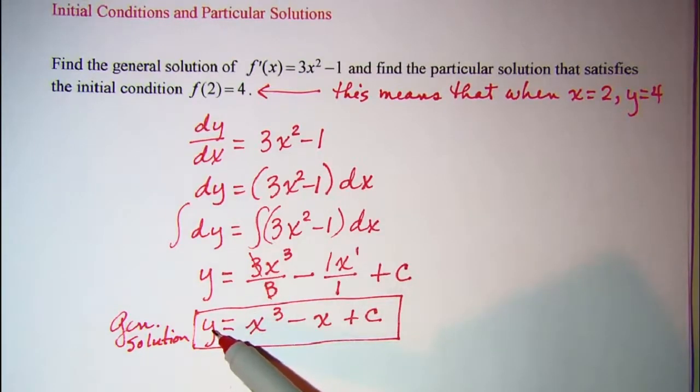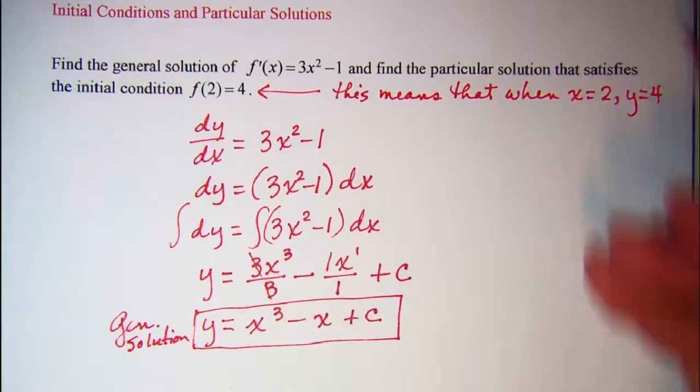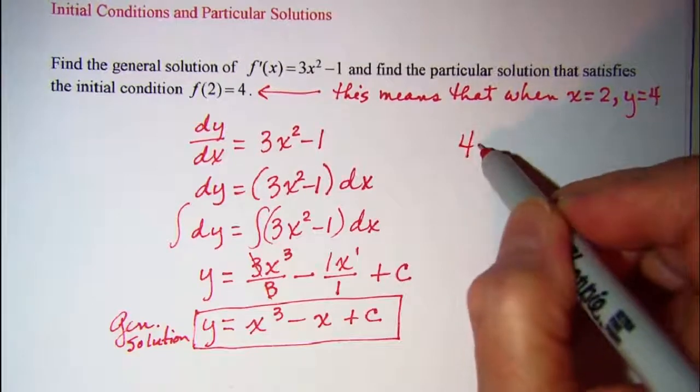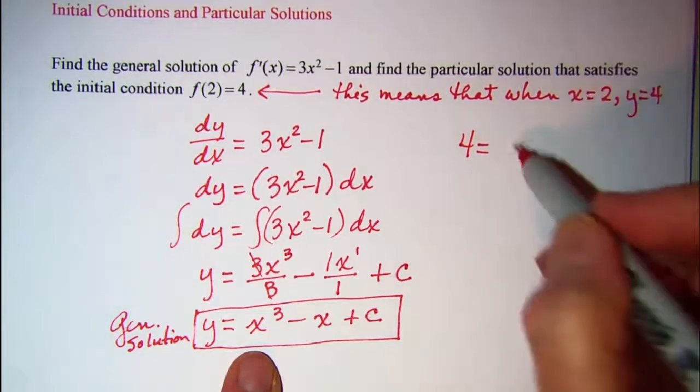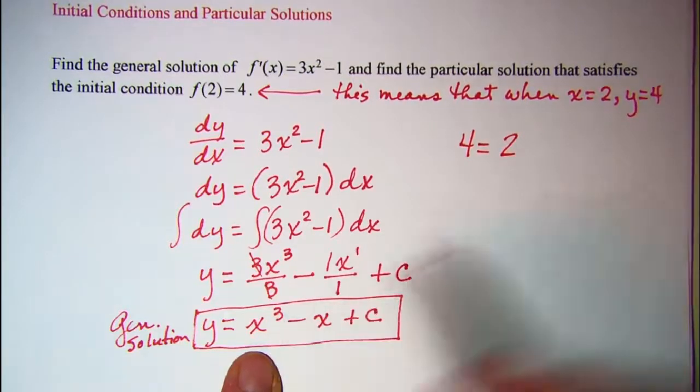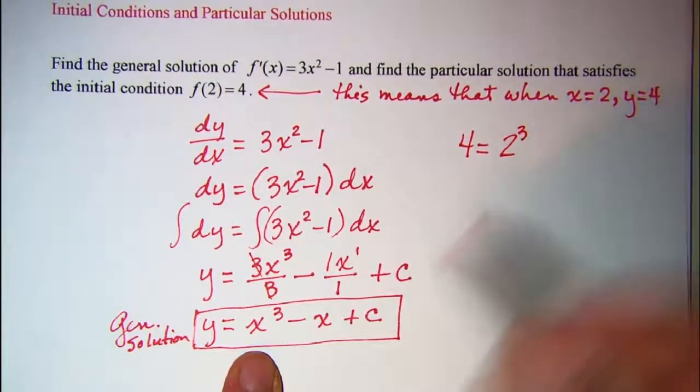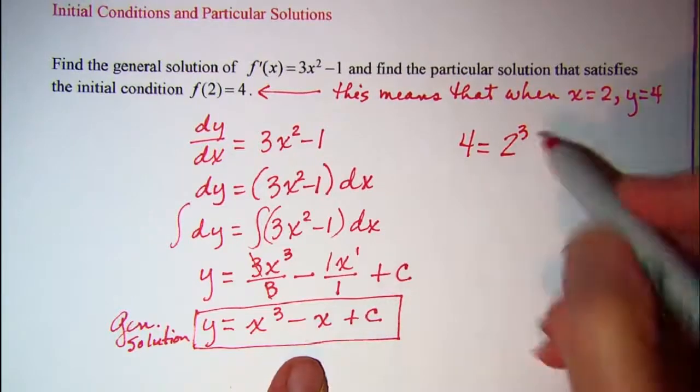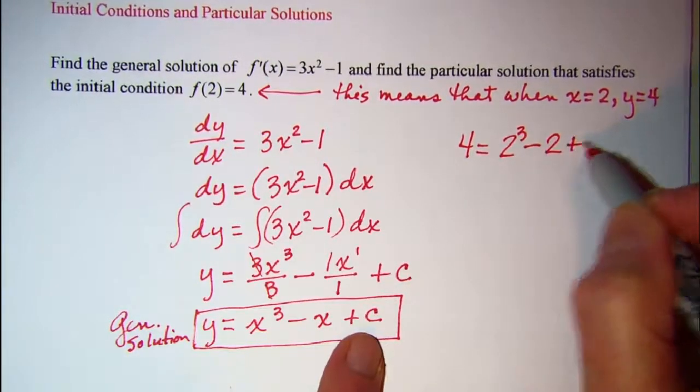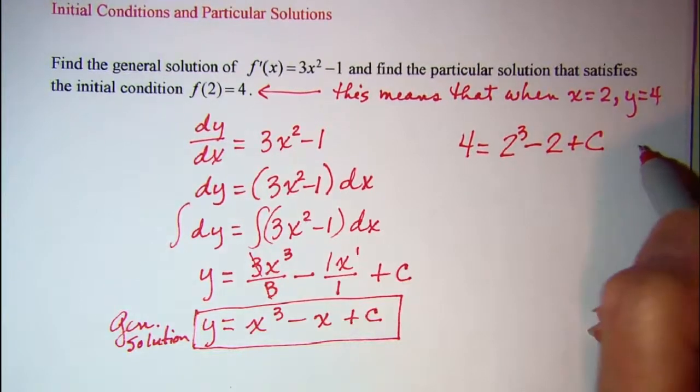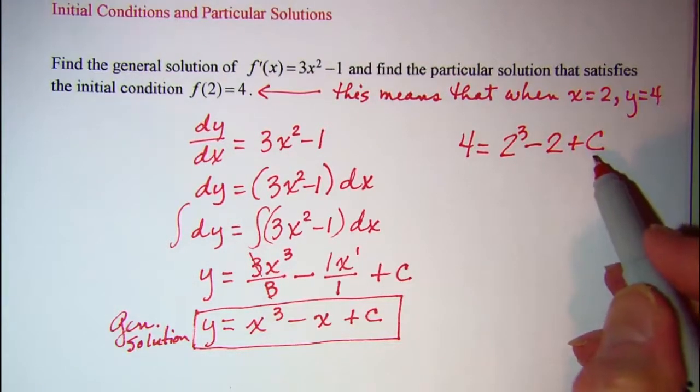So y - I'm going to put a 4 in place of y - and then x is 2 and that's cubed, minus x so minus 2, and then plus our constant. Now we just need to solve for c.